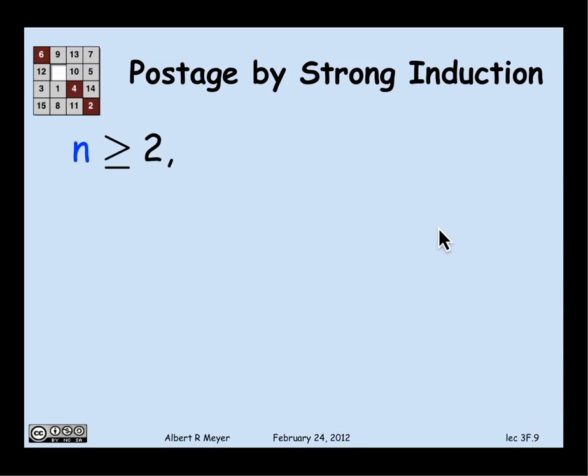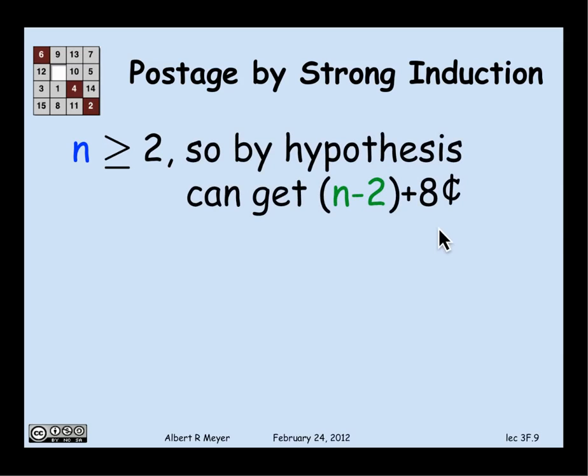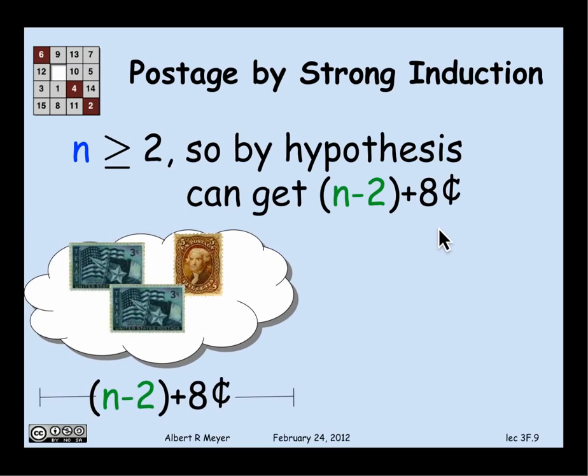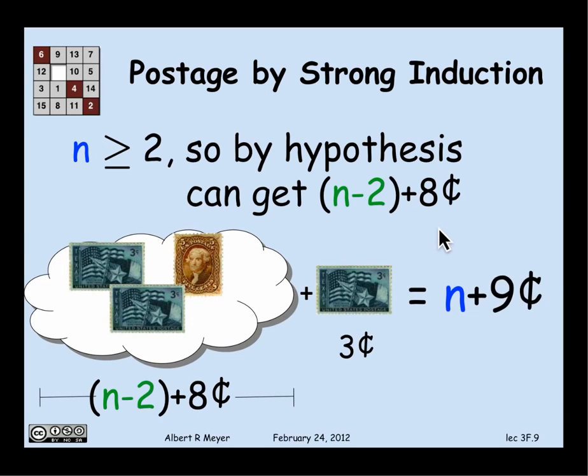So now my job is to get n+9 cents, where n is greater than or equal to 2. Well, the nice thing about n being greater than or equal to 2 is that if I subtract 2 from it, it's a smaller number, and it's still non-negative. And that means that I can get that amount plus 8 cents. So I'm in this nice situation where, by strong induction, I can get n-2+8 cents. There they are. And how do I get to n+9? Well, it's easy. You add a 3 cent stamp, and you have n+9 cents, which completes the proof of the induction case, and the whole theorem is proved.